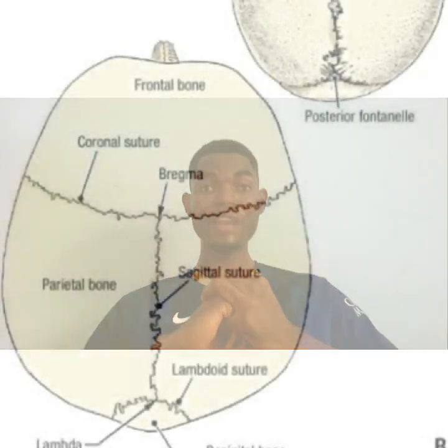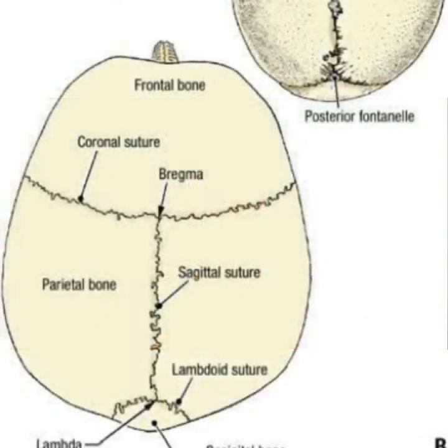Moving forward, let's talk about sutures. A suture is a fibrous joint that is very unique to the skull. It is immovable and it completely fuses at the age of 20.